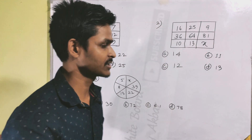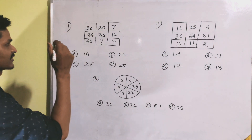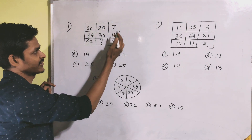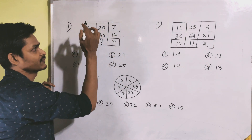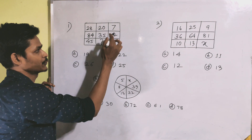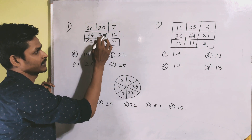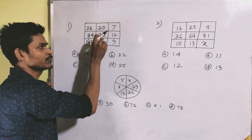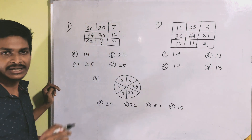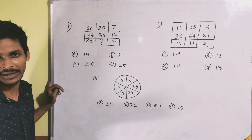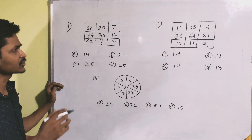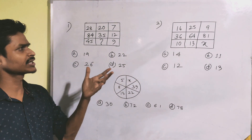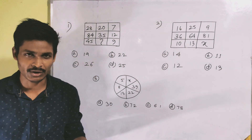Let's start. First, we have the numbers: 28, 27, 84, 35, 12, 45. The question mark is what comes next. This is an interesting question and we can try to solve it.